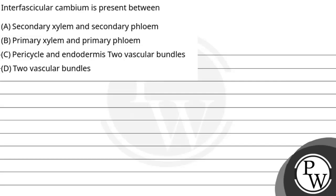Hello, let's read this question. The question says: Interfascicular cambium is present between — the question is asking where interfascicular cambium is present. Option A: secondary xylem and secondary phloem. Option B: primary xylem and primary phloem. Option C: pericycle and endodermis of two vascular bundles. Option D: two vascular bundles. To answer this question, let us understand the key concept.